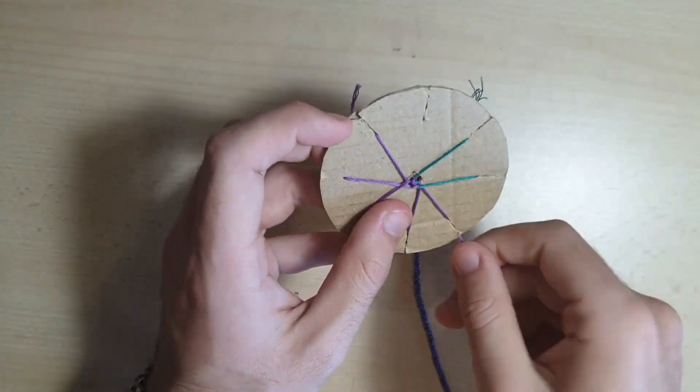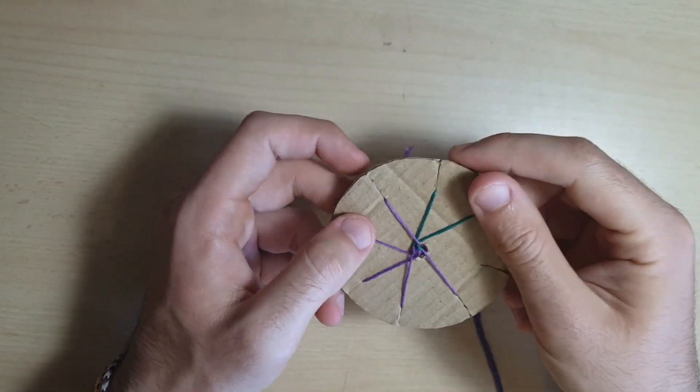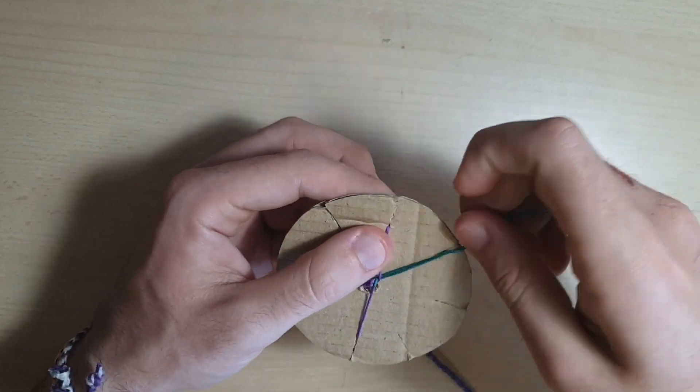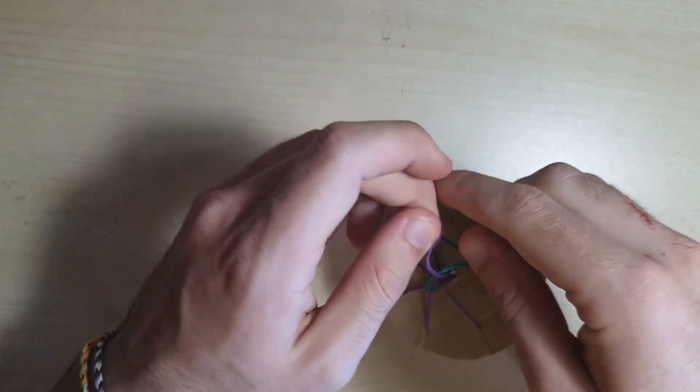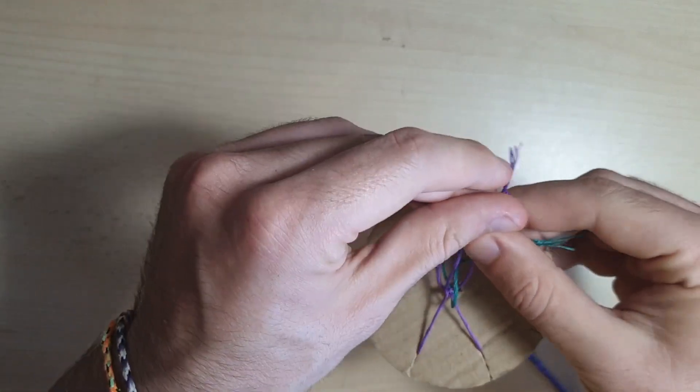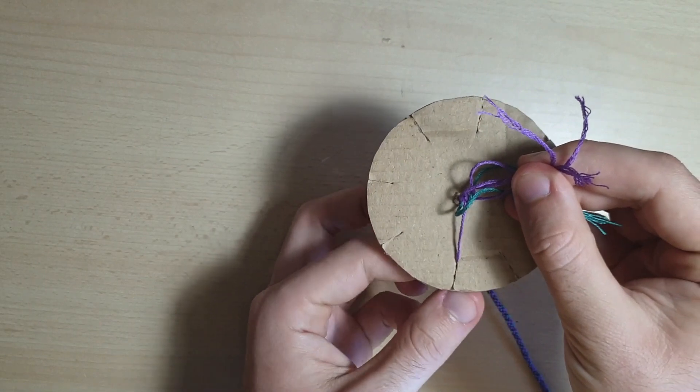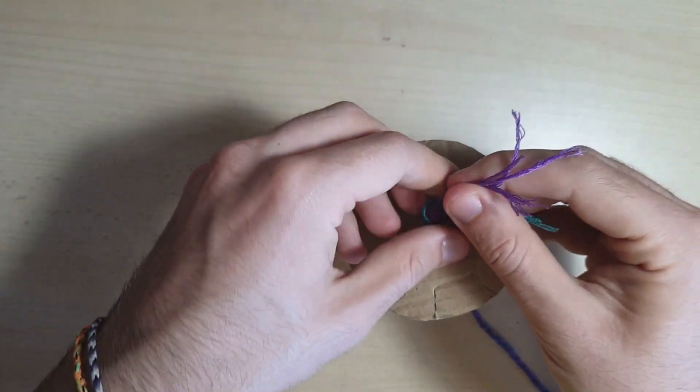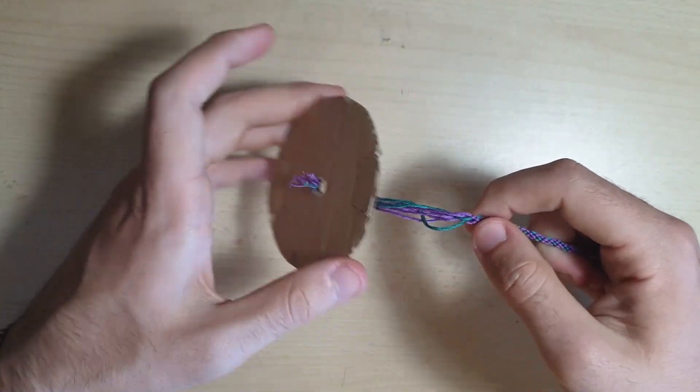So what you do there is you start by taking everyone out of its slot, and you hold them together. And then you pull it through the edge of the loom.